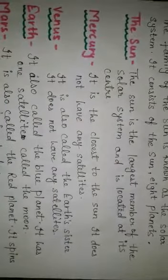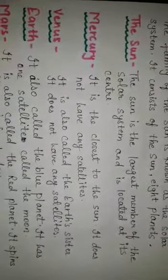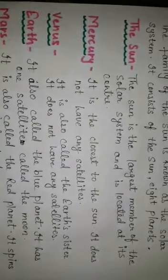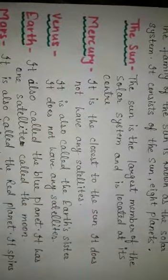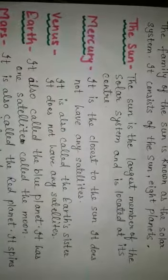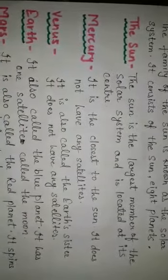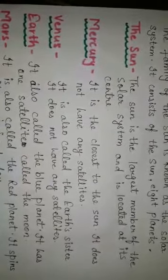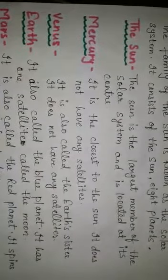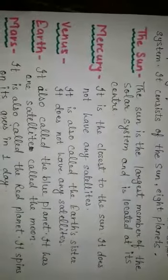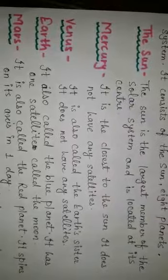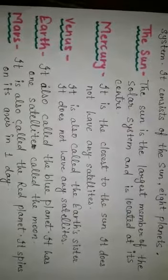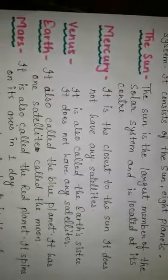Venus. It is also called the earth's sister or earth's twin because it is similar to earth in size and mass. It does not have any satellite. It is also known as the morning and evening star. It takes 255 days to complete one revolution around the sun.